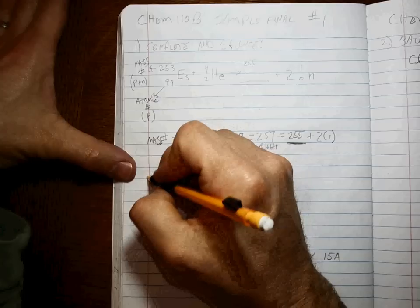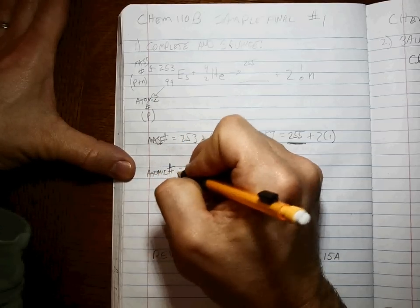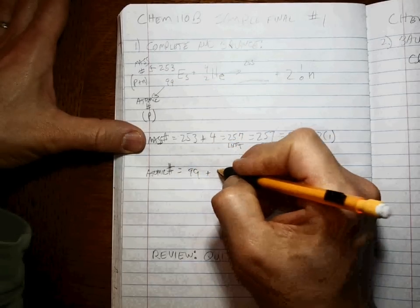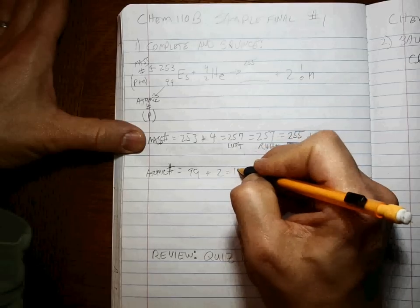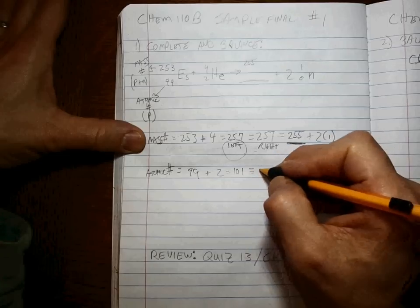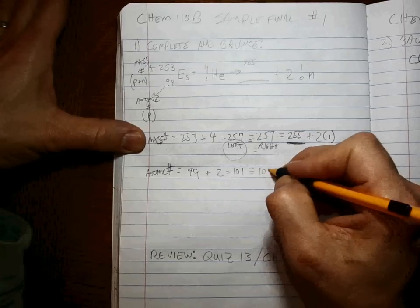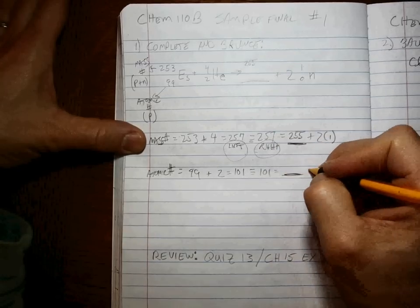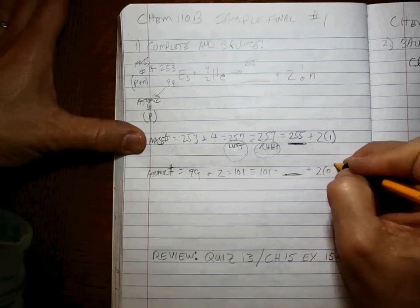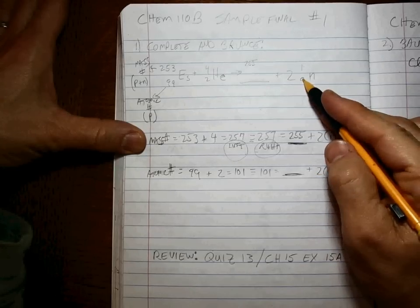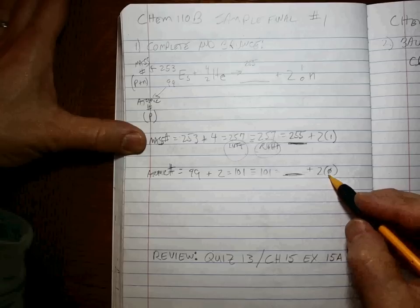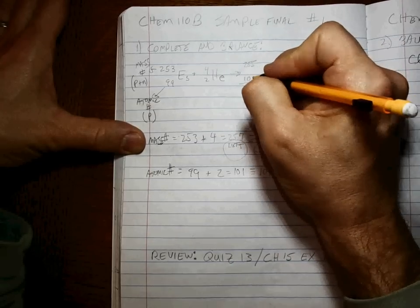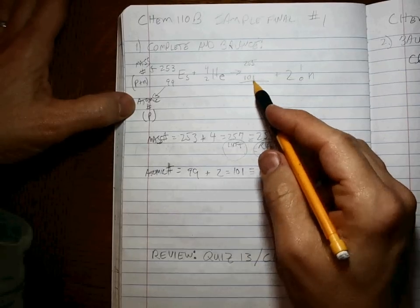All right, so now let's do the atomic number. The atomic number has to be the same on both sides. The left-hand side is 99 plus 2, or 101 on the left. So it has to equal 101 on the right. So how does that happen? Well, whatever that unknown is, plus 2 times 0, because there's no protons in a neutron. So that has to be 101.